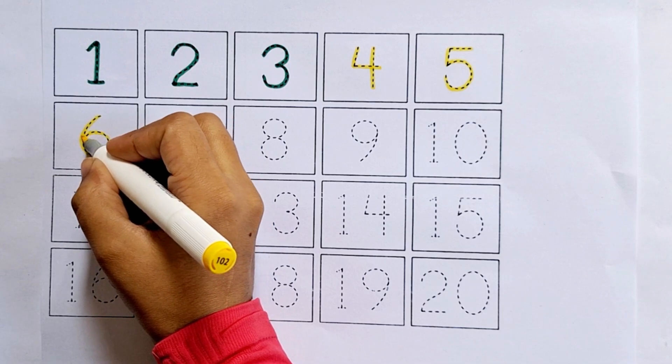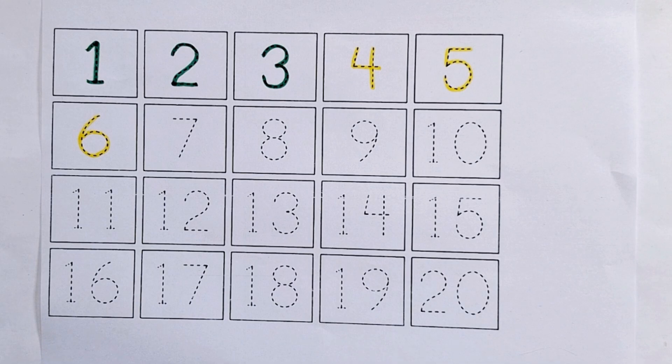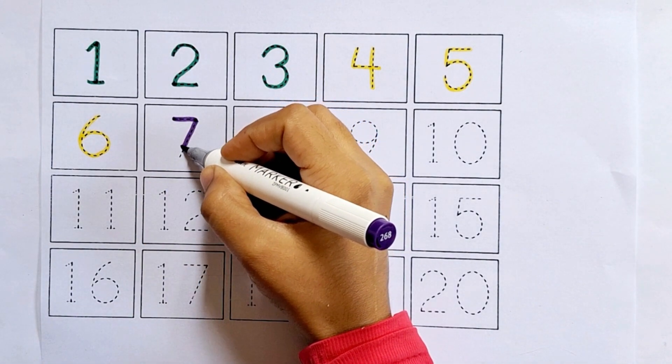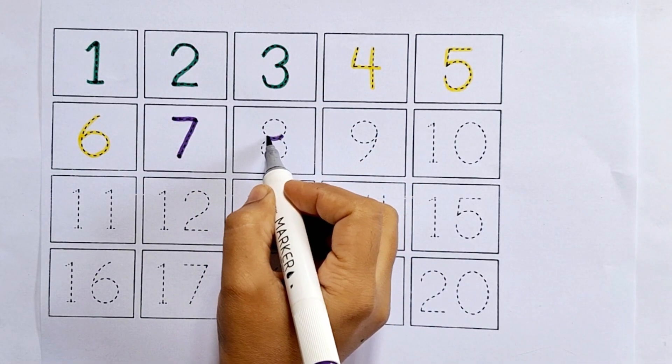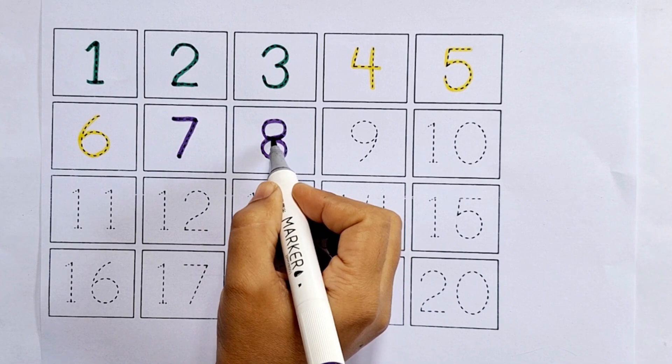After five comes six. Seven, this is seven. After six comes seven. Eight, this is eight. After seven comes eight.